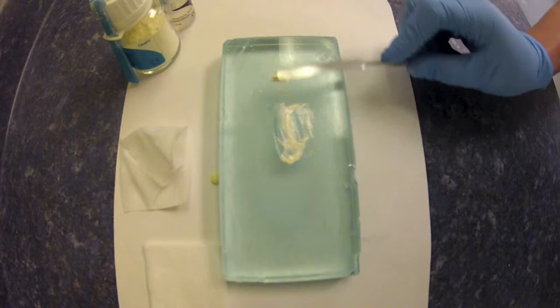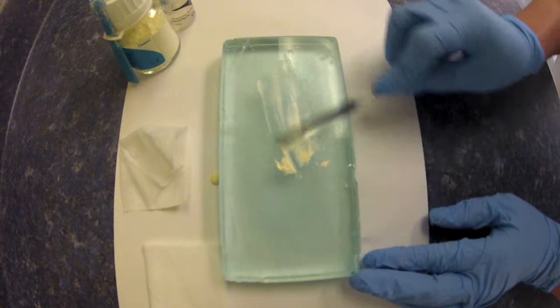The end result should be a luting consistency that can be used to cement permanent restorations, such as a crown, bridge, inlay, or onlay.